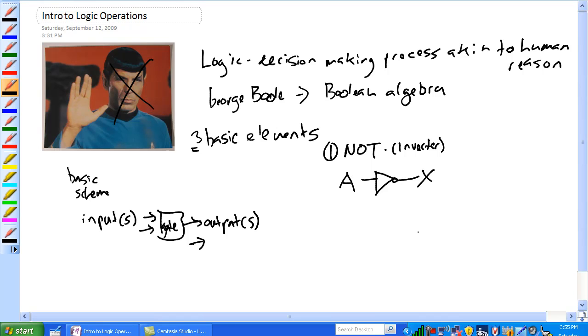And all an inverter does, it just takes A, swaps the value of it, and then outputs X. So basically if A is coming in at zero, X is going to come out of one, or it comes in low, it comes out high. If A is one, it comes out of zero.